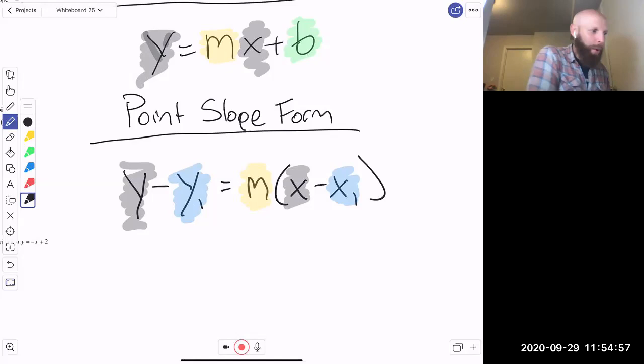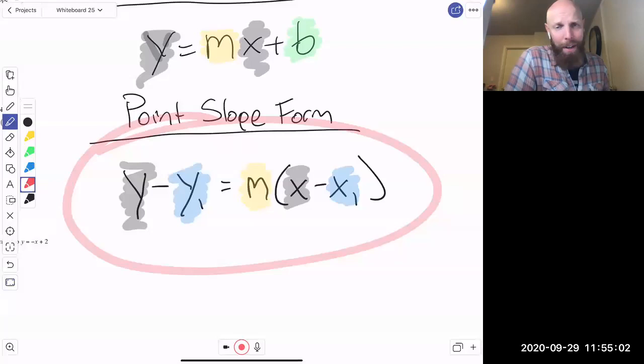So what you're going to notice here is this y and this x always stay as y and x in the equation, very much like it did up here in the slope-intercept. That y and that x always hung around. So you're always going to see the y and the x just hanging out there. So knowing the point-slope form, this is all you got to do. Memorize this or write it down on a note sheet, cause we're going to be able to use a note sheet and then let's utilize it.